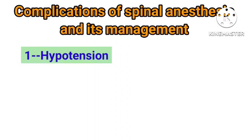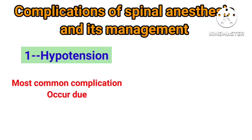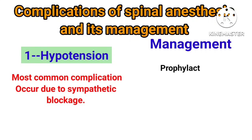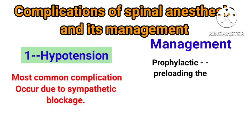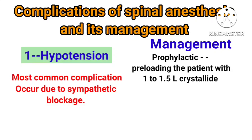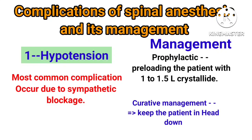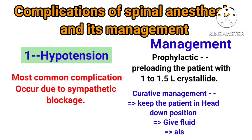The first complication is hypotension, the most common complication, occurring due to sympathetic blockage. Management: Prophylactically, preload the patient with 1 to 1.5 liters of crystalloid. Curative management includes keeping the patient in a head-down position, giving fluids, and also giving ephedrine.